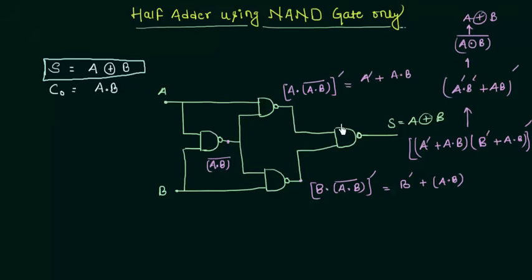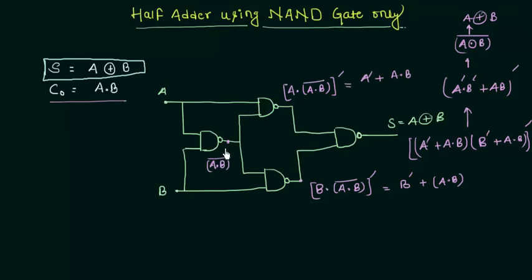So I just proved that this combination of NAND gates gives you the XOR operation. Since one input is A and the other is B, the sum S = A XOR B is realized by this logic. Now what we are left with is the carry output, which is A AND B. Instead of making a separate AND gate using NAND gates, we will try to reuse something from this circuit to save gates.